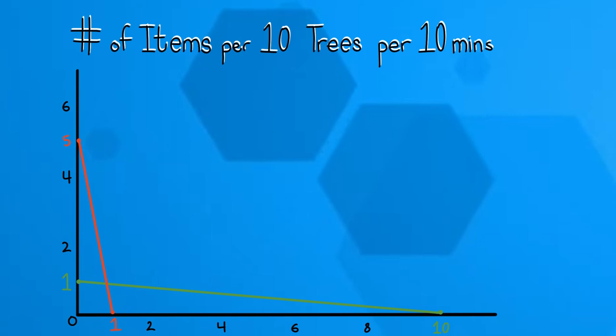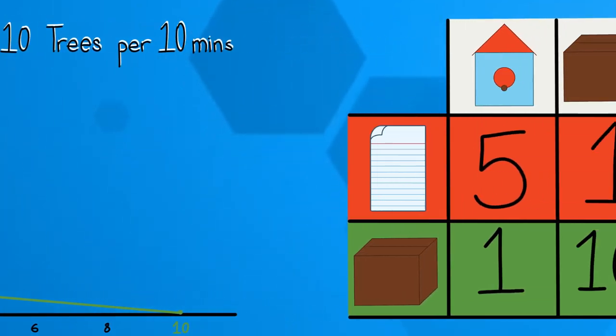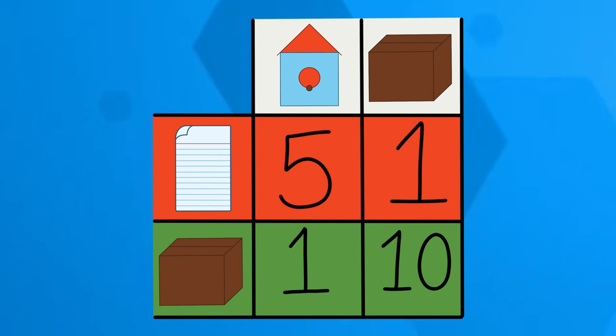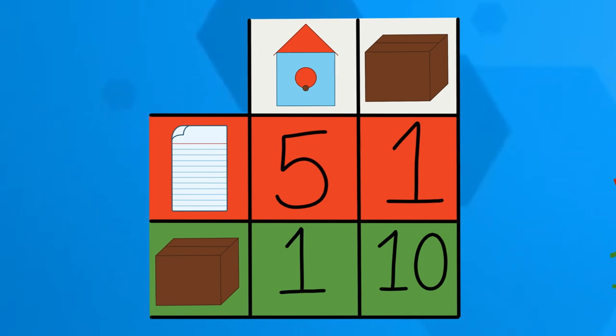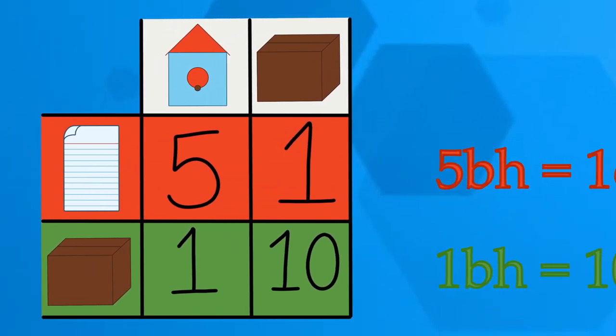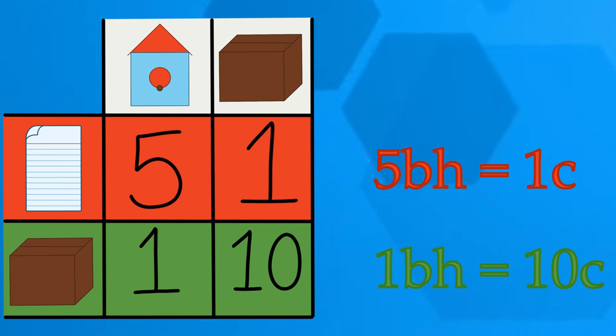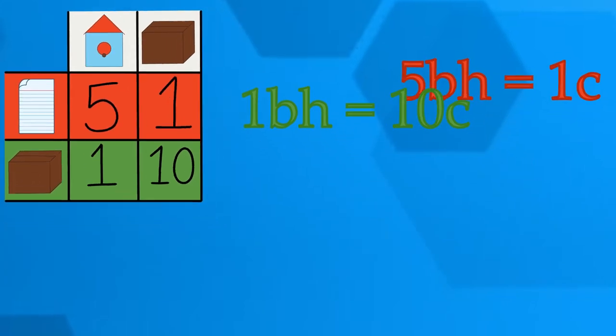In order to find the opportunity cost for each kingdom, I'm going to make a table that shows the maximum amount of birdhouses and cardboard per kingdom. Because these two maximum numbers use the same amount of resources, I can put the two items into an equation like this. With this equation, I can now find how many sheets of cardboard are equivalent to birdhouses and vice versa by isolating what I want to find.